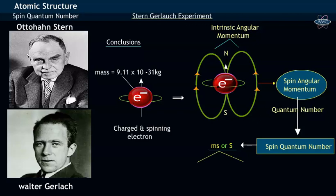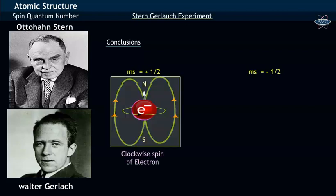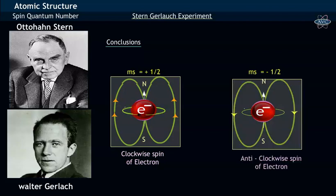MS or capital S takes two values, MS or S equals to plus half and MS equals to minus half. The value MS equals to plus half refers to the clockwise spin of electron, while anti-clockwise electron spin is referred by MS or S equals to minus half.